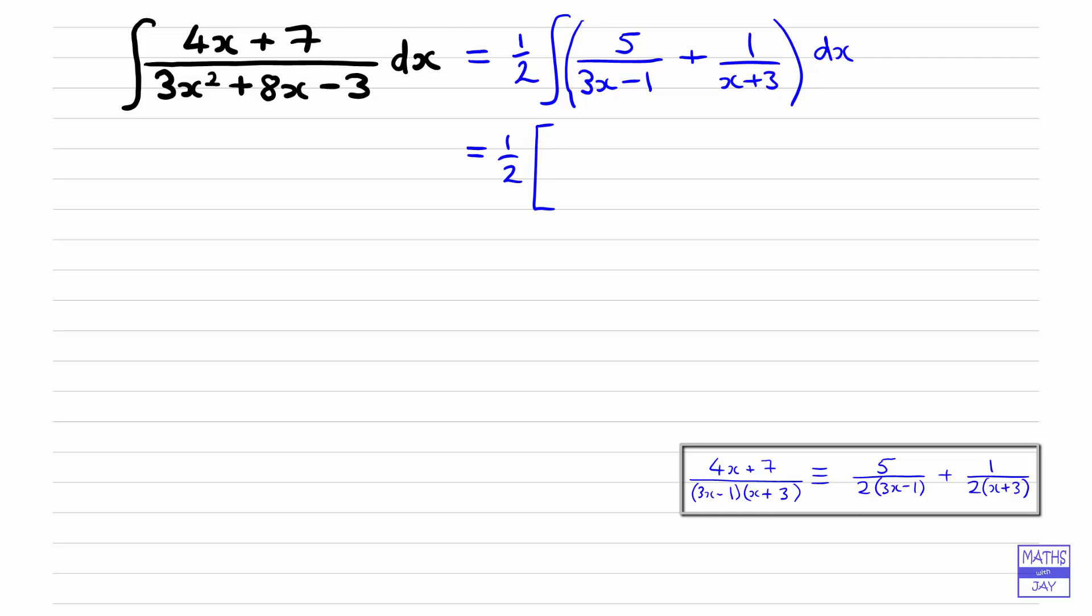So the first fraction has got a 5 multiplying 1 over 3x minus 1, so first of all we get a 5 there, but when we're integrating 1 over 3x minus 1, we're going to need to divide by 3, because when we differentiate 3x minus 1 we get 3, so we divide by 3 there. And then we know that when we integrate 1 over something we get the natural log of it, so that's going to be log of modulus of 3x minus 1, we can only find the log of positive number. And then next one a bit simpler to deal with, it's just going to be the log of the modulus of x plus 3, and then we want a constant of integration. It can be inside the bracket or outside, it doesn't matter.